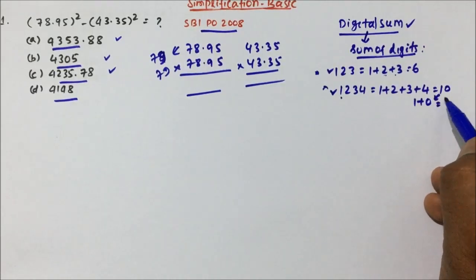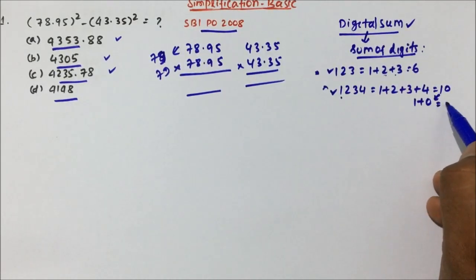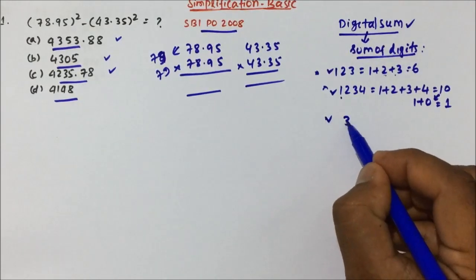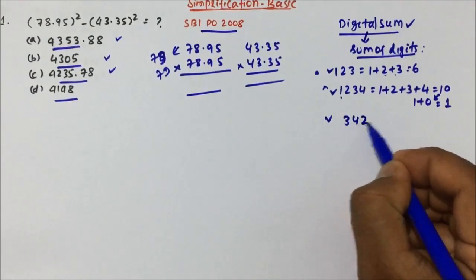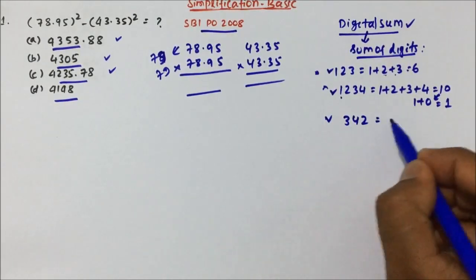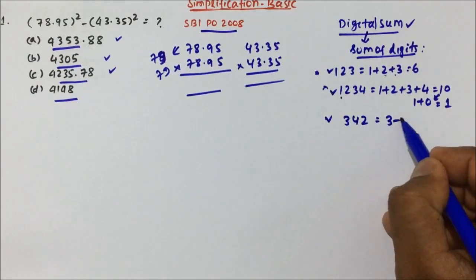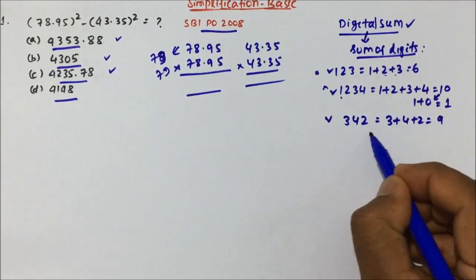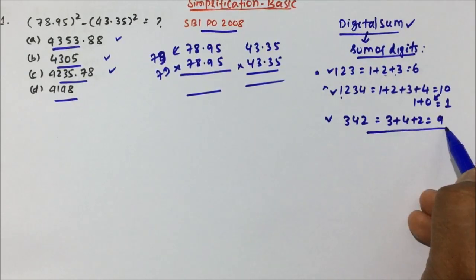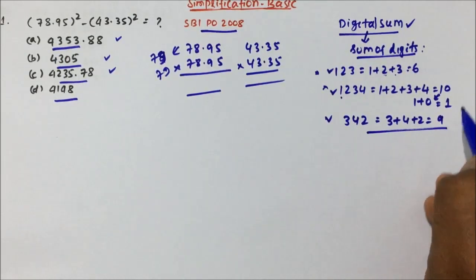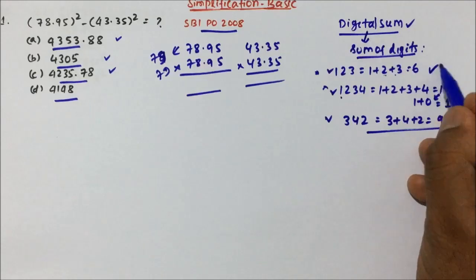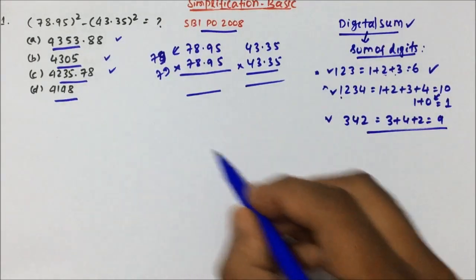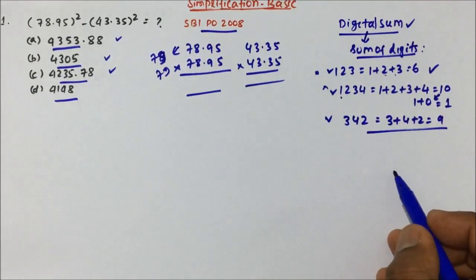So for 1234, we get 10, and again 1 plus 0 will be 1. For 342: 3 plus 4 plus 2 will be equal to 9. So like this we calculate the digital sum. Now we have to understand how it works in the question, but before that there is one more concept.